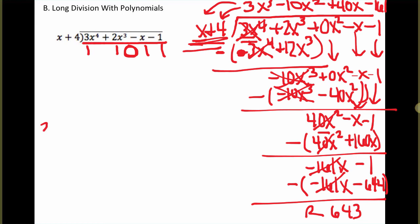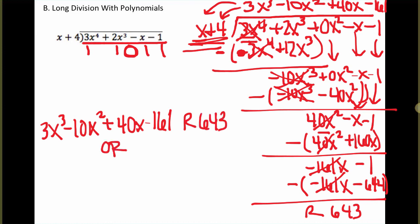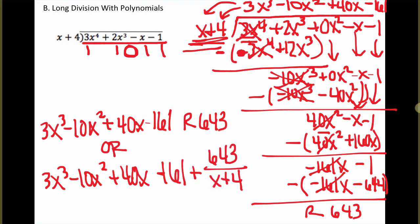So the answer, this one's a long one. Two options for writing this. We'll rewrite this entire quotient here at the top. And then you can just write remainder 643. Or, write it as a full function. Instead, we can take the remainder and put that in the numerator of the fraction. And then take our x plus 4 and put that in the denominator. So there's a quick explanation of how to do long division with polynomials.